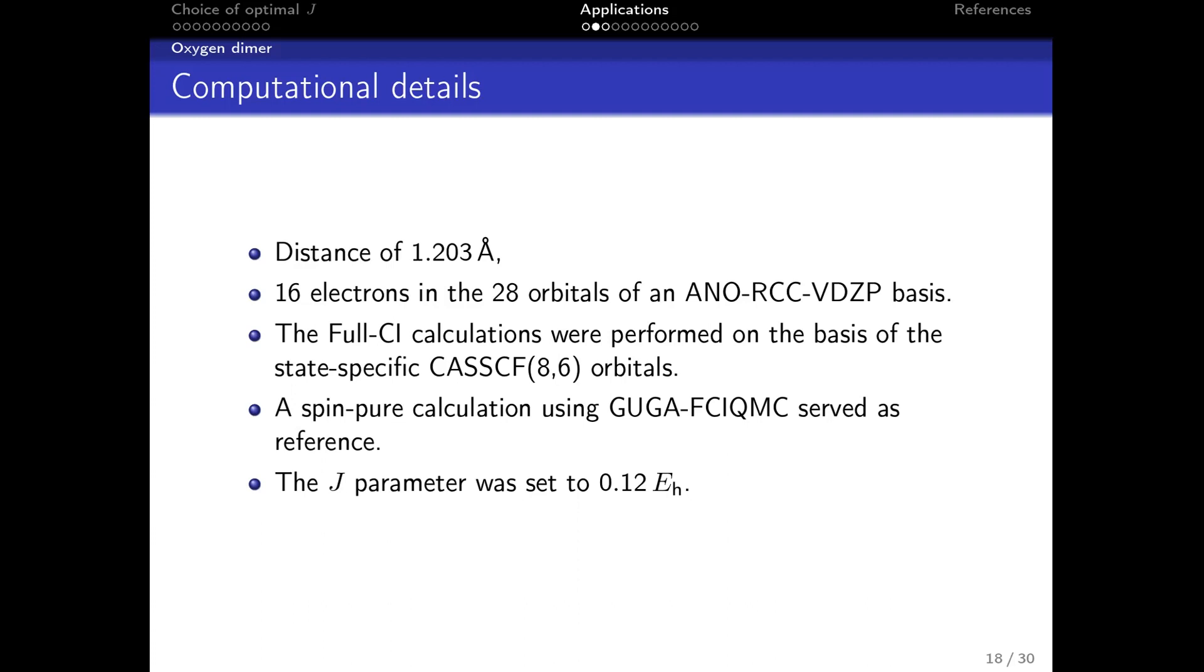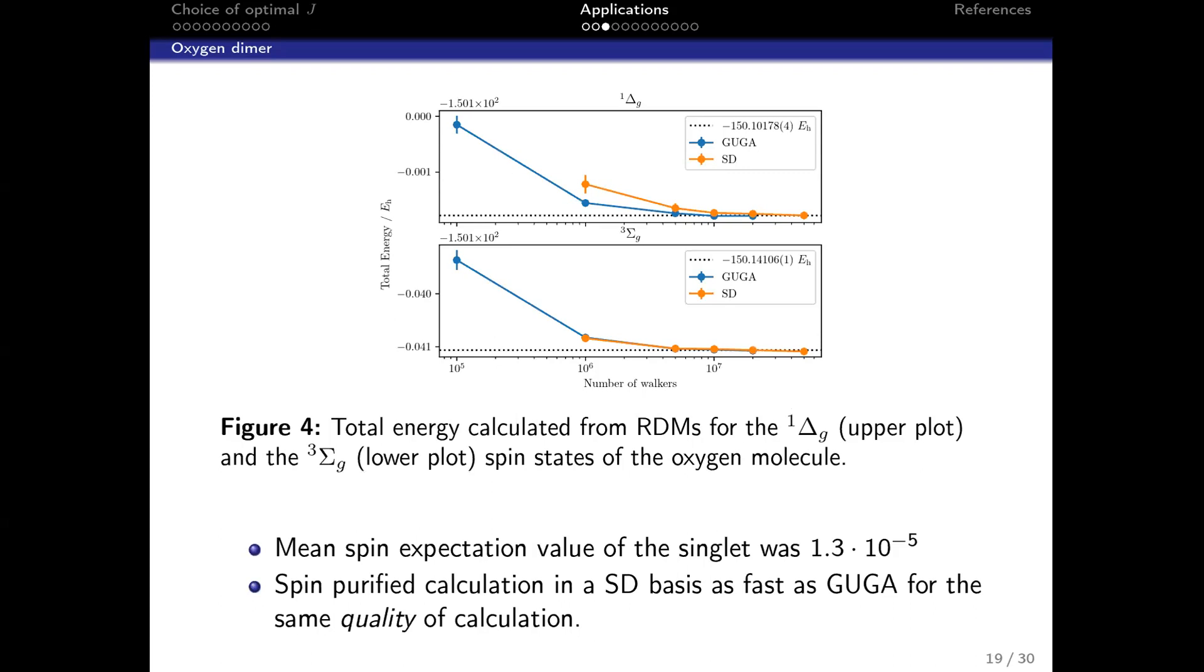We did oxygen in equilibrium, full CI, 16 electrons and 28 orbitals. We used Guga FCIQMC as a reference. Here you can see the singlet Δ and the triplet Σ state, and both Guga and Slater determinant based calculations converge to the same solution. The triplet is much faster because the alpha-alpha determinants are already spin eigenfunctions.